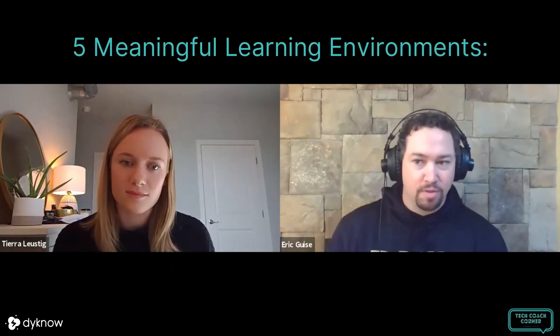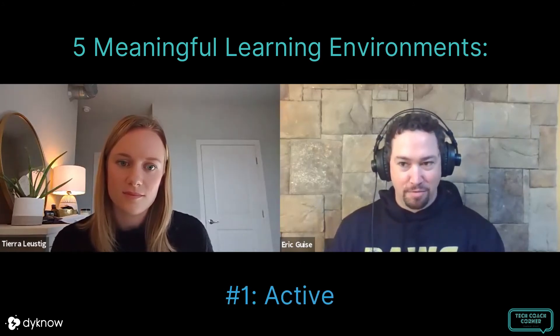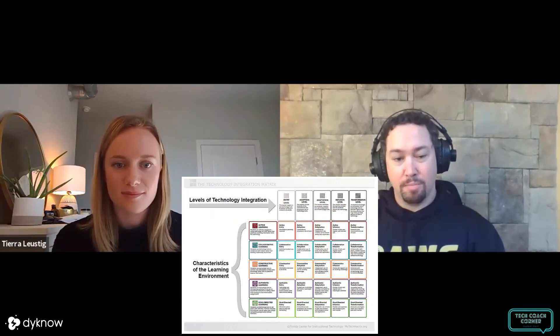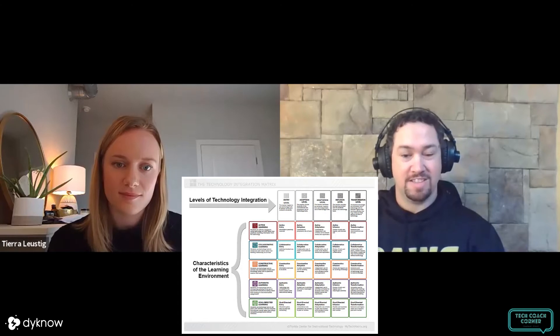Now the five meaningful learning environments are: active, collaborative, constructive, authentic, and goal-oriented. When you put the five learning environments and the five levels of integration together, you get those 25 boxes. The beauty of the technology integration matrix is that it's interactive. If you want to know what the entry level of integration is, you click on it and it tells you exactly what it is — it gives you the student role, the teacher role, the setting, and how the technology is used.